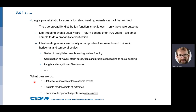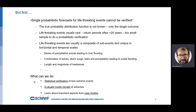What we can do is run statistical verification of less extreme events — typically one-in-20 days or one-in-100 days — to verify the 95th or 99th percentile. We can also evaluate the model climatology to see if the model on average can capture the tail of the PDF in the observations. And we can look at case studies and learn about the important aspects to make these predictions. All these things can be done in conjunction to get good evaluation and knowledge about how well we predict extremes.